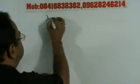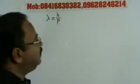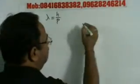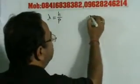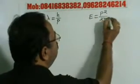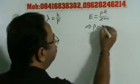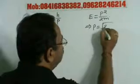As we know that lambda is equal to H by P. And also, this energy is equal to P squared by 2M. Kinetic energy is equal to P squared by 2M. So here we have P is equal to under root 2ME.